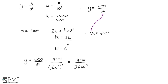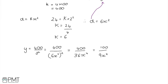This gives an expression for y in terms of x, but it's not in its simplest form as required. 400 and 36 share a common factor of 4, so dividing both by 4 simplifies the fraction to 100 over 9. Therefore the formula for y in terms of x in its simplest form is y equals 100 over 9x to the power of 4.